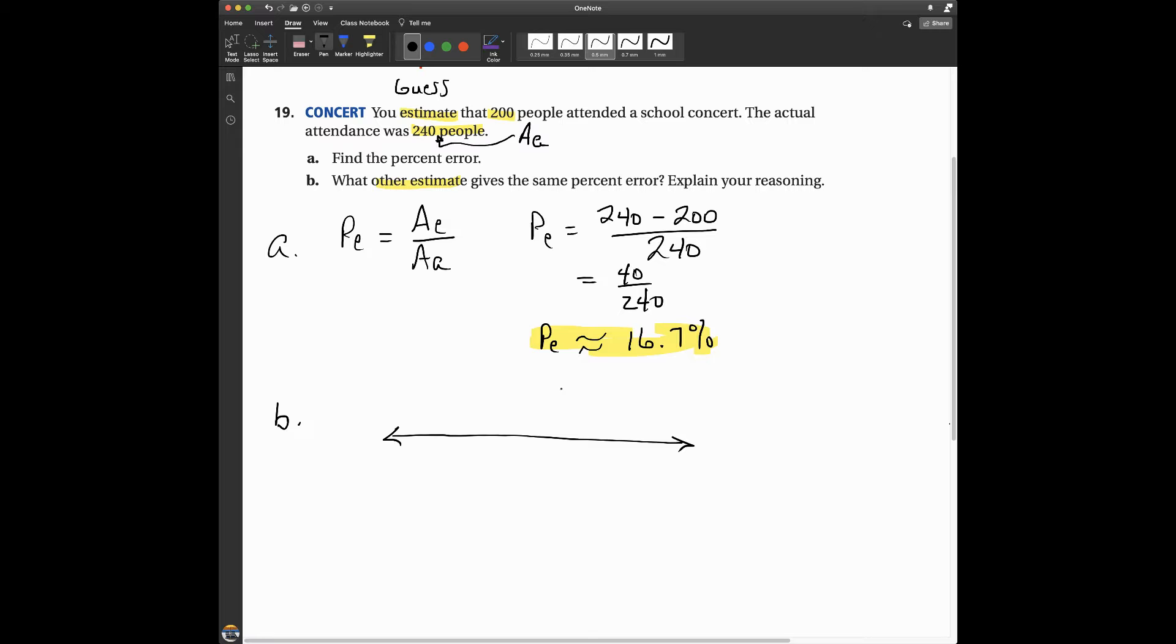So, the actual amount, let's say, let's put it right here. So, the actual number of guests, or people, or students, or whatever, at the concert was 240. Alright, and you guessed 200. So, there's 200 right there.